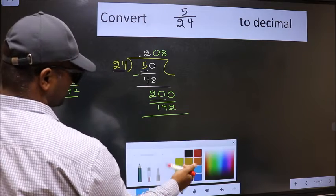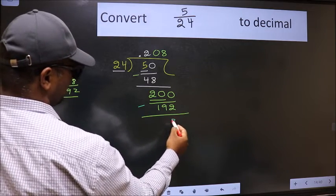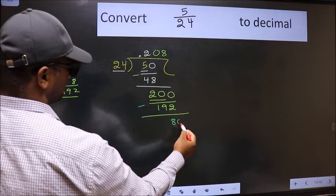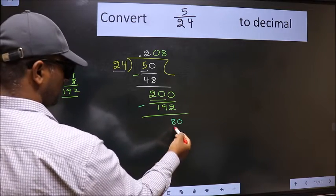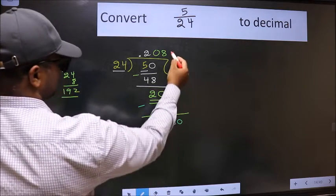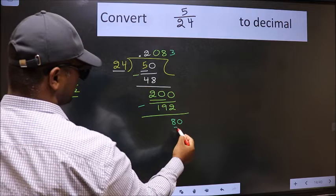Now we should subtract. We get 8. 8 smaller than 24. And we already have the decimal. So directly take 0. So 80. A number close to 80 in 24 table is 24 threes, 72.